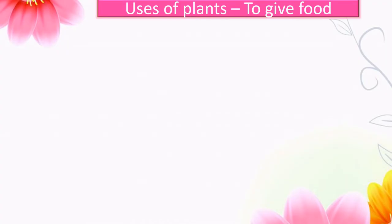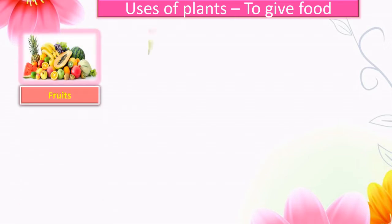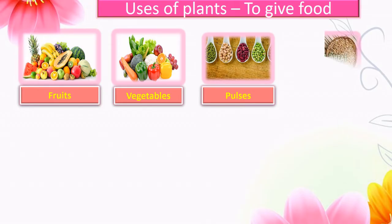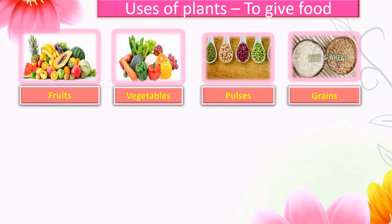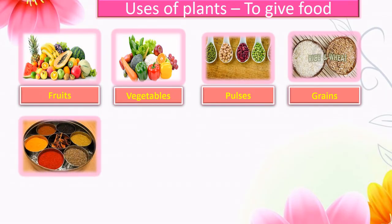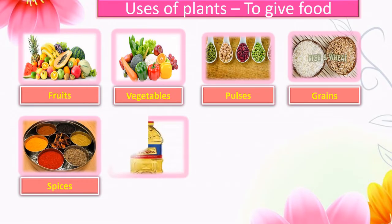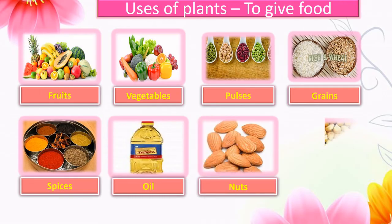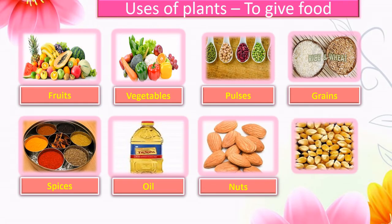The second use of plants is to give us food. We get different types of food items from plants — for example, fruits, vegetables, pulses, grains, spices, oil, nuts, and seeds.